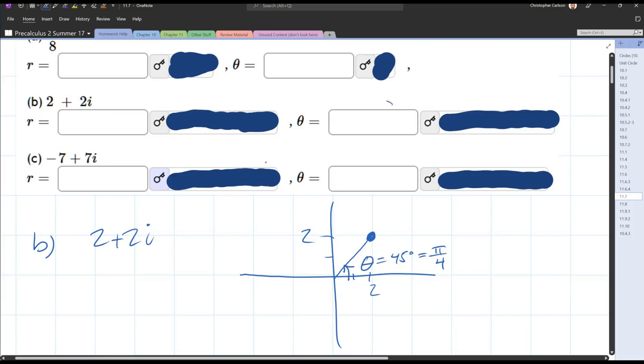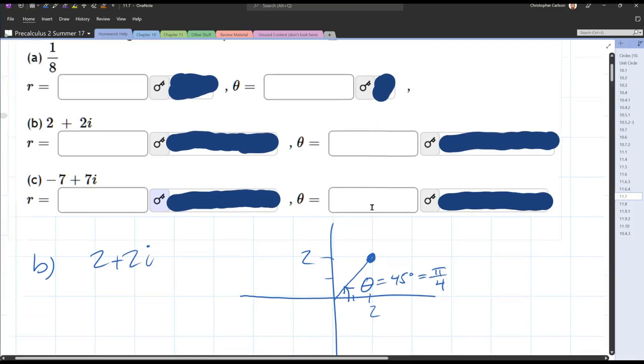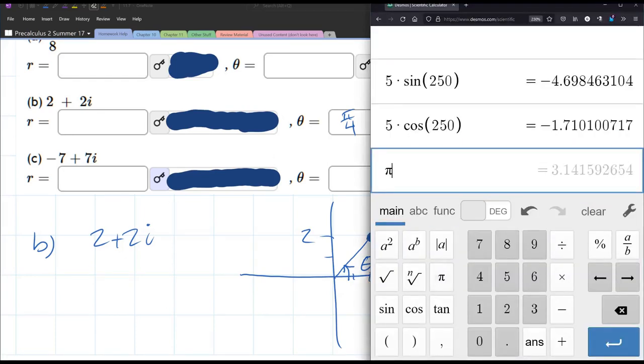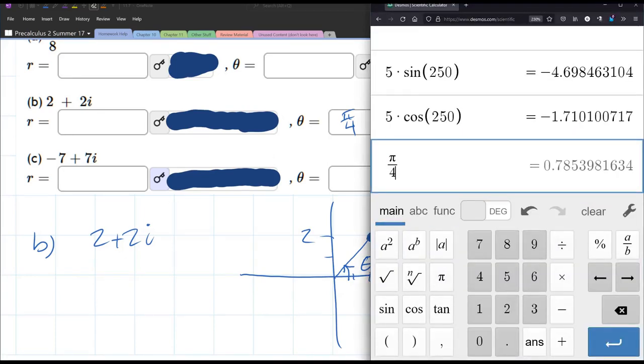So that is our angle right here. I think we need to answer in radian measure, so we're going with pi over 4. When I uncover these answers, you're going to see that they are decimal answers, and that's okay. We're going to go to our calculator and type in pi over 4.